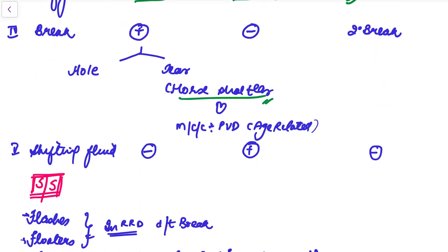The fifth point is shifting fluid. Shifting fluid is absent in RRD and tractional RD, but it is present in exudative RD. What is shifting fluid? It is related to position. For example, if the patient is sitting upright, the fluid will be accumulated in the inferior retina. As soon as the patient assumes a supine position, the fluid shifts — the inferior retina settles down and the fluid shifts towards the superior retina. There will also be fluid under the macula. The effect of the fluid is positional. This shifting fluid is a feature of exudative RD and is not present in rhegmatogenous or tractional retinal detachment.